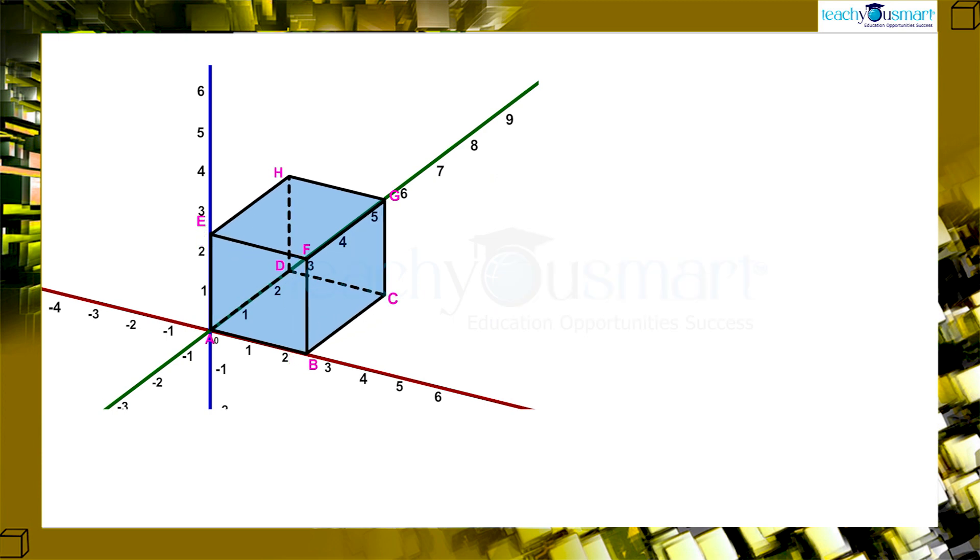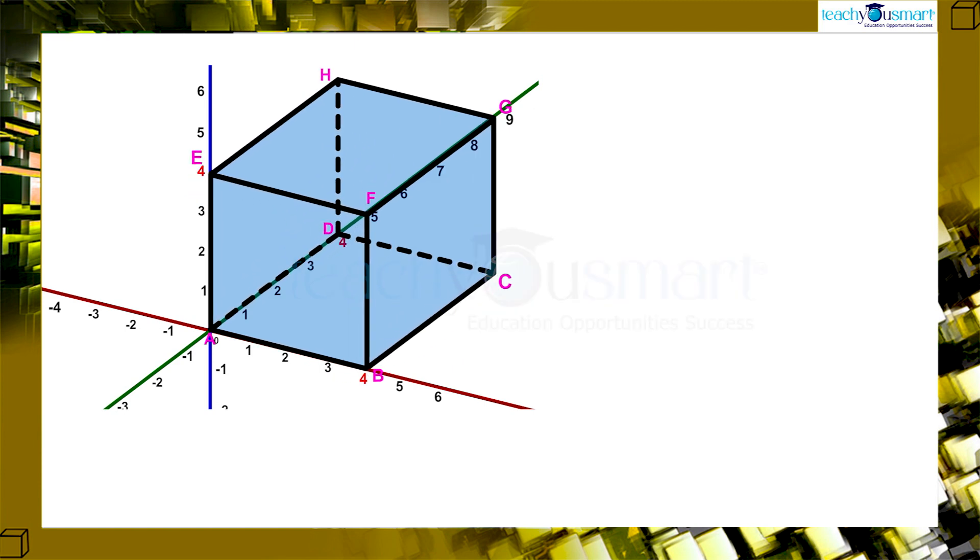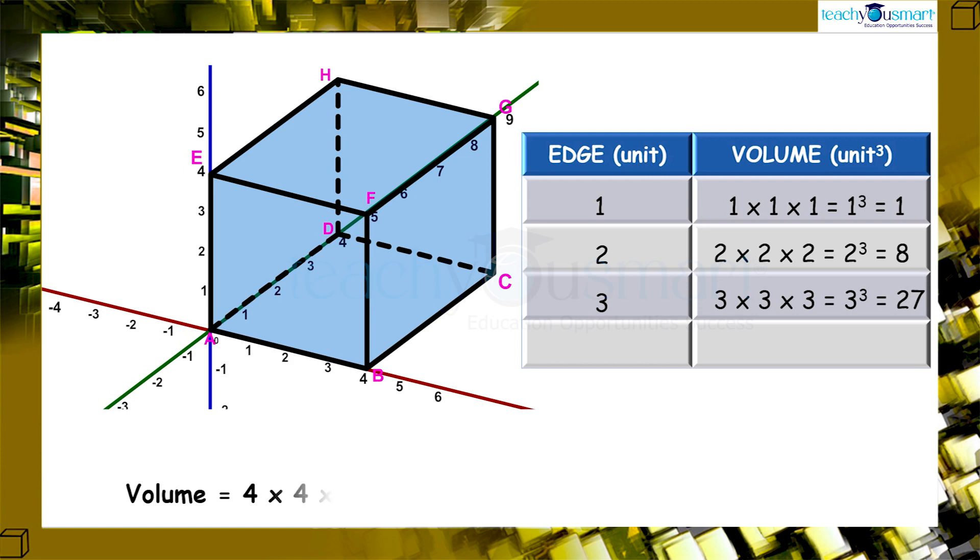If the length a equals 3 units, then the volume is 3 multiplied by 3 multiplied by 3 equals 3 raised to 3. If the length a equals 4 units, then the volume is 4 multiplied by 4 multiplied by 4 equals 4 raised to 3.